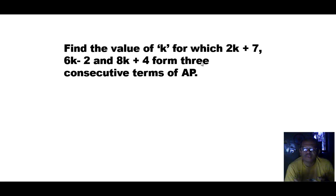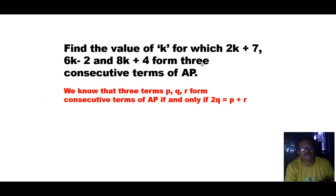Here 2k plus 7, 6k minus 2, and 8k plus 4 are the consecutive terms of an AP, and we have to find the value of k. We know the condition that three terms P, Q, and R form consecutive terms of AP if and only if 2q equals P plus R.